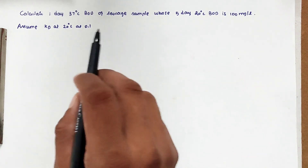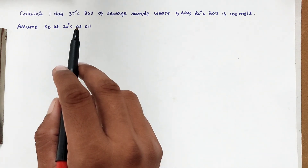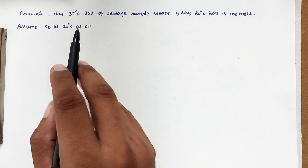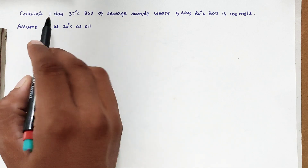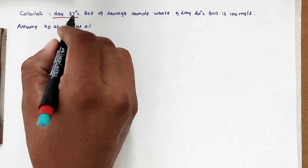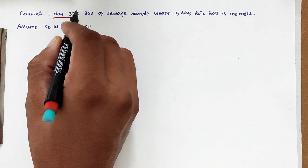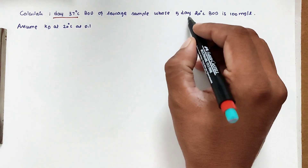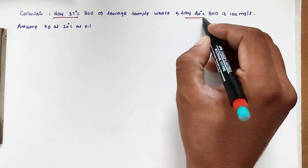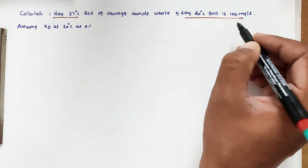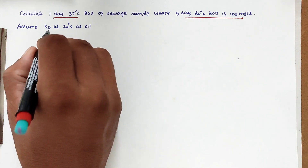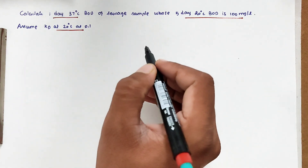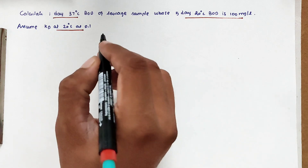Hello friends, welcome to Student Engineering Exam. Today we are going to see a problem related to wastewater engineering in the topic of BOD. The problem is: calculate the 1-day BOD of a 37°C BOD sample whose 5-day 20°C BOD is 100 milligrams per liter. Assume KD at 20°C is 0.1.